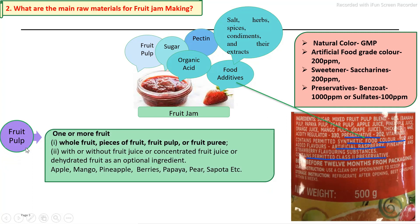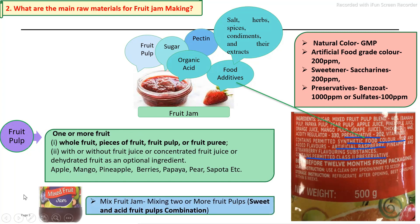The first ingredient is fruit pulp, which may be used directly as whole fruit or pieces of fruit. That means the fruits are pre-processed first, and the resulting fruit juice, pulp or whole fruits are used for the preparation of jam. For mixed fruit jam, two or more fruit pulps in proper proportion are used in the manufacturing process.